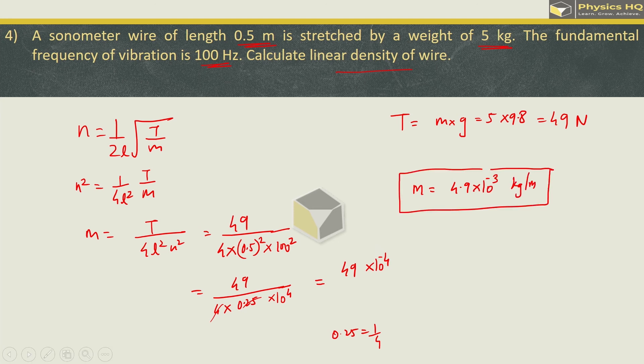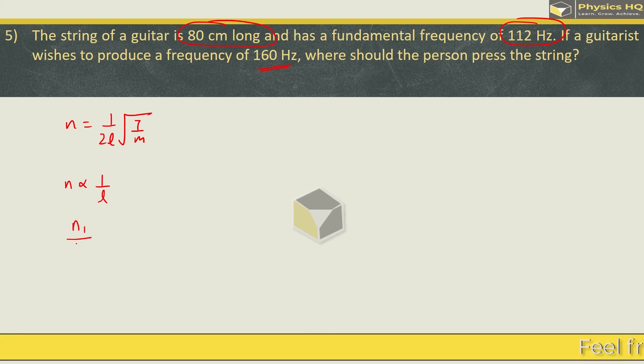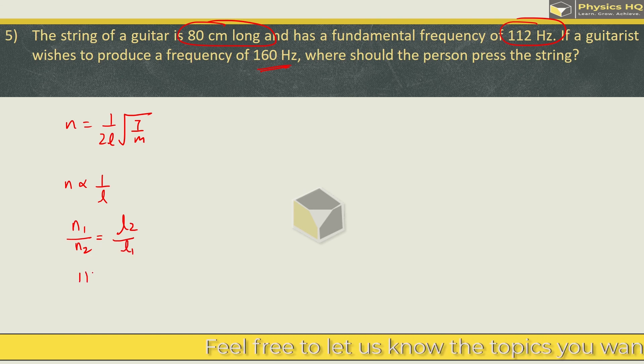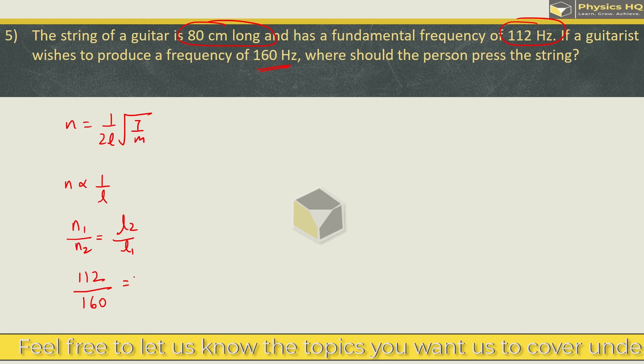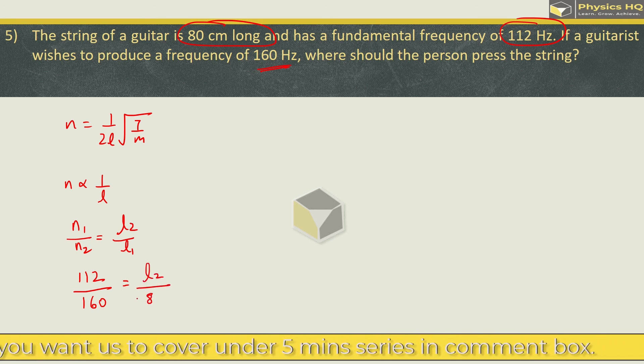The string of guitar is 80 cm long and has a fundamental frequency of 112. If a guitarist wishes to produce 160 Hz, where should the person press the string? N is inversely proportional to L. That means we can write n1 upon n2 is equal to L2 upon L1. Initially the frequency was 112, but it needs 160.